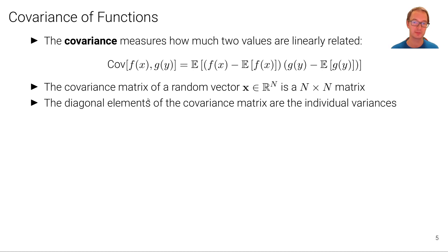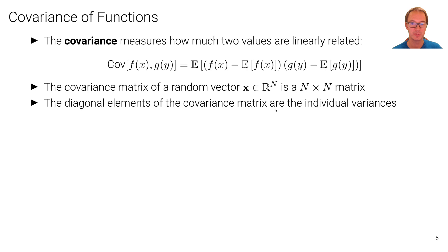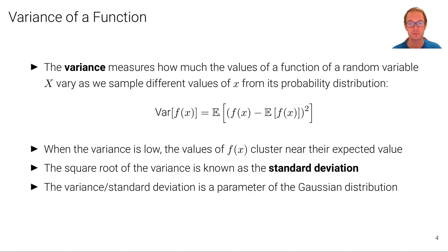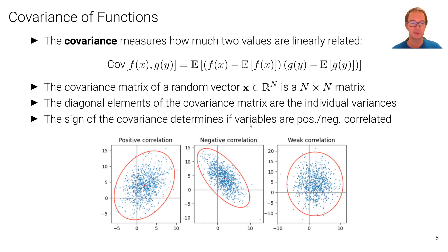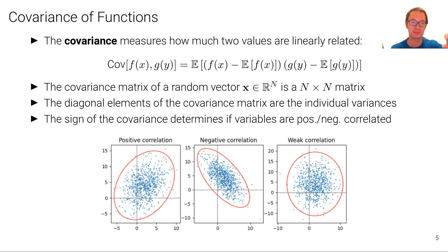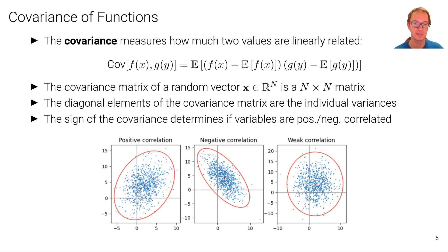The covariance matrix of an n-dimensional random vector is an n-by-n matrix, where we compute the covariance between all pairs of dimensions. The diagonal elements of the covariance matrix are the individual variances. If you take the covariance of f of x with itself, the right-hand term becomes the left-hand term and we are left with the variance expression. The sign of the covariance determines if variables are positively or negatively correlated. In a two-dimensional case, we have a two-by-two matrix with variances on the diagonal and one off-diagonal covariance element.